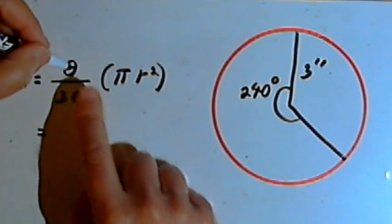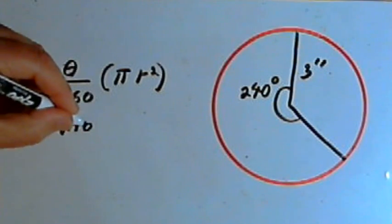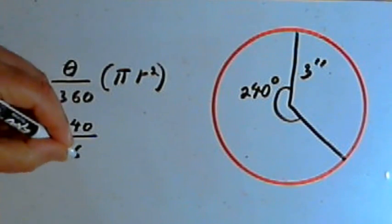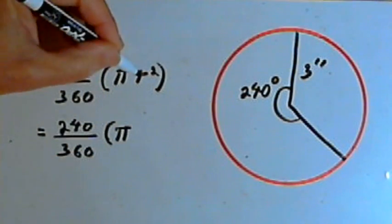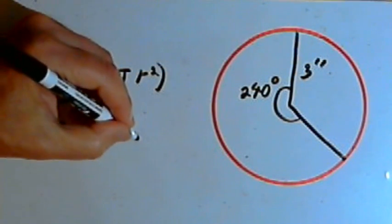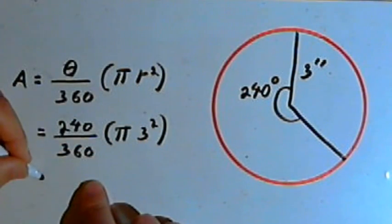Instead of theta, I'll plug in 240. So I've got 240 over 360 times pi, and instead of r, I'll put in the radius, which is 3, squared. And now I'll just figure out what this is.